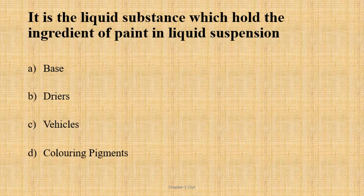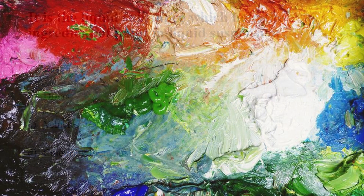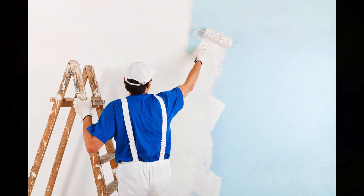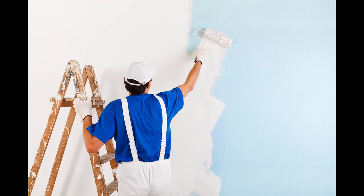Paint is a liquid substance which holds the ingredients of paint in liquid suspension. Paint is a fluid substance used on surfaces. The first item covers its 5 components.